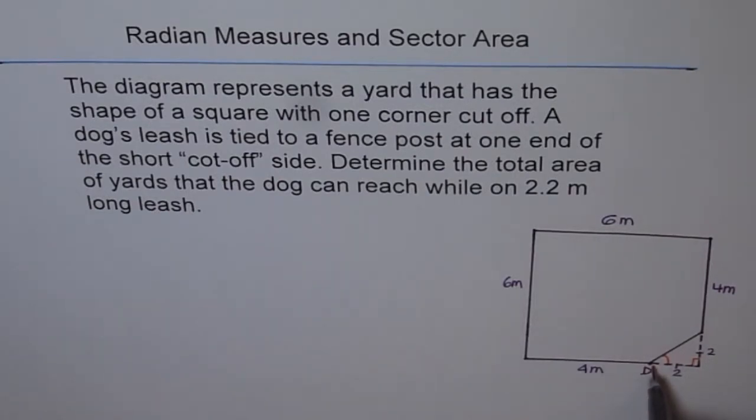Now a dog is attached here with a leash which is 2.2 meters long. This side will be 2 square root 2, so 2.2 is less than that. Therefore we could draw a circle which the dog could cover.